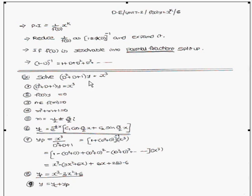Let us consider one example: (D² + D + 1)y = x³. To get the complementary function, we consider f(D)y = 0. The auxiliary equation is f(m) = 0, therefore m² + m + 1 = 0.